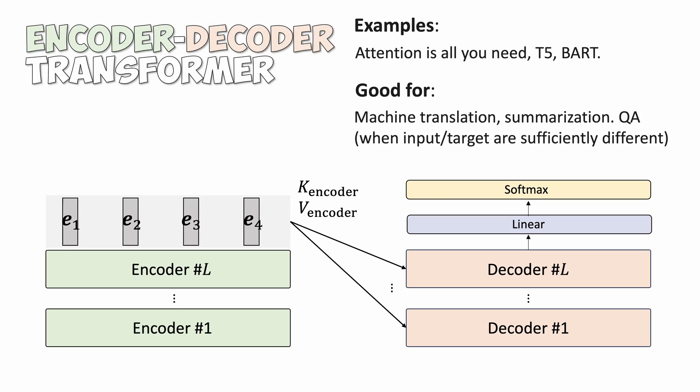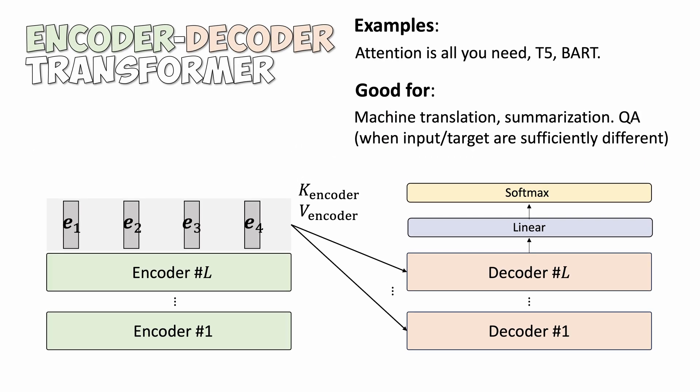This type of architecture is called encoder-decoder transformer. Examples include the original transformer, T5, and BART. They are good for machine translation and summarization tasks. This design works well when the input and target sequence are sufficiently different.